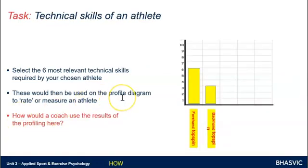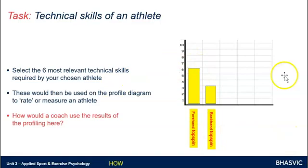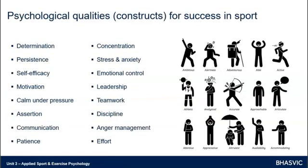We might also look at our particular sport and how skillful we were in certain aspects — what are the key skills required within this sport? In gymnastics there are certain skills, in tennis there are different skills, in football there are different skills. And we might then grade ourselves to determine what our strengths and weaknesses are. But what we're getting around to in performance profiling in this applied psychology unit is looking at the psychological qualities or constructs — what psychological qualities are needed for a particular sport?